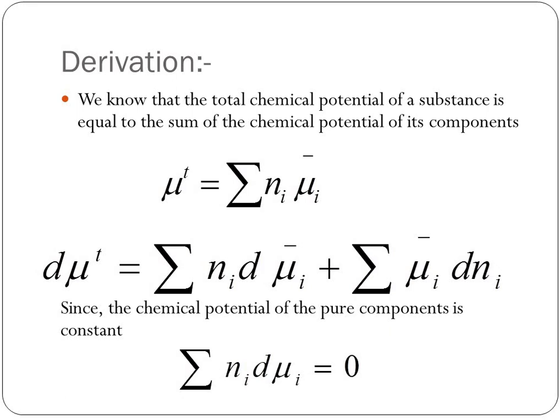If we account for a small change in total chemical potential, we can write it mathematically as dμt = Σ(Ni dμi) + Σ(μi dNi). Since the chemical potential of pure components is constant, therefore dμi̅ = 0.